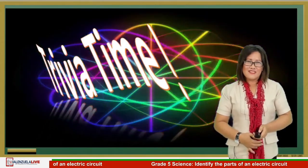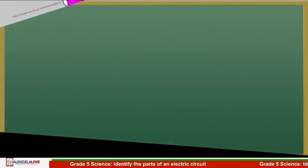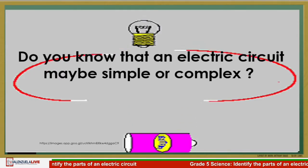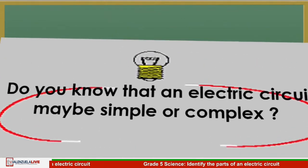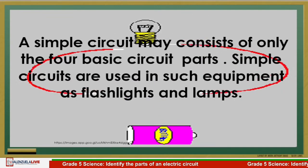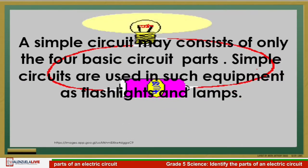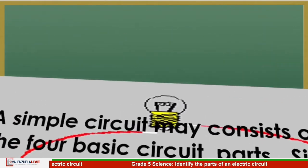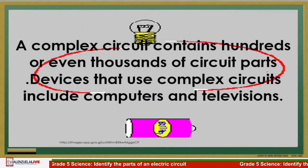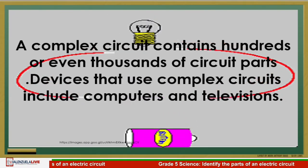In addition to our lesson, let's take some trivia. Do you know that an electric circuit may be simple or complex? A simple circuit may consist of only four basic circuit parts. Simple circuits are used in such equipment as flashlights and lamps. A complex circuit contains hundreds or even thousands of circuit parts. Devices that use complex circuits include computers and televisions.